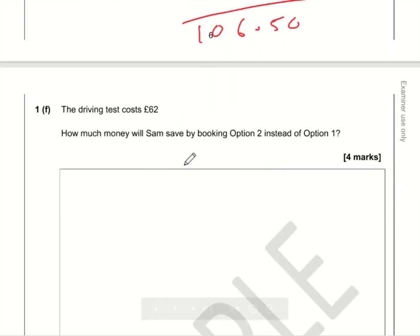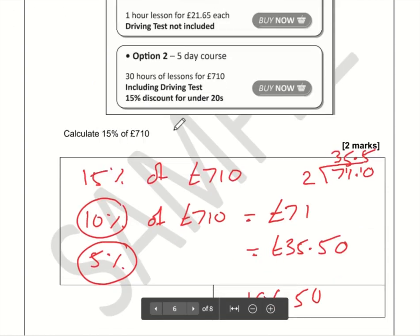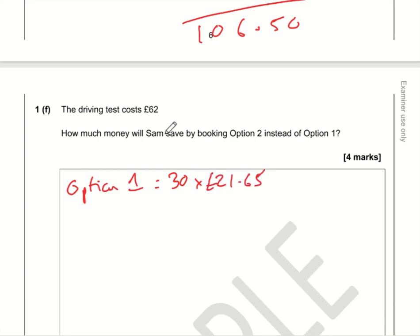So let's just add these together. We've got 50 at the end, 1 plus 5 is 6, 7 plus 3 is 10, so £106.50. Okay, so Option 2—how much do we save? Let's have a look at Option 1 first of all. So Option 1, Sam is 17 and he's 30 hours, so it's going to be 30 times by £21.65.